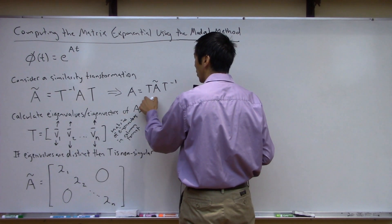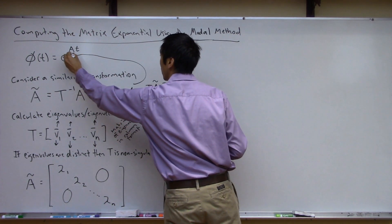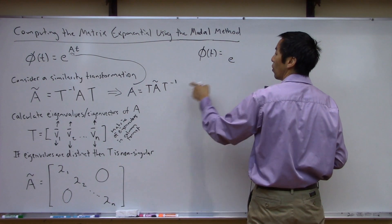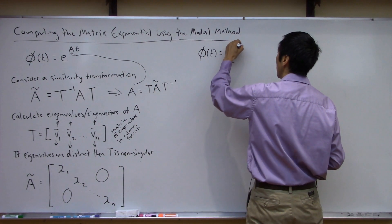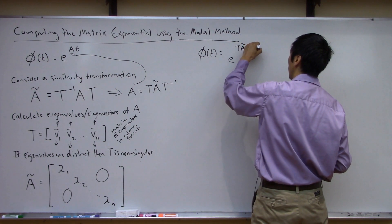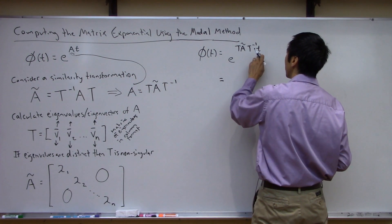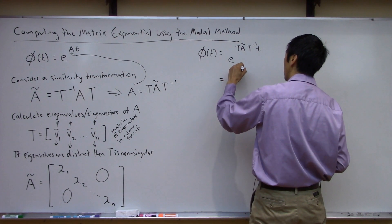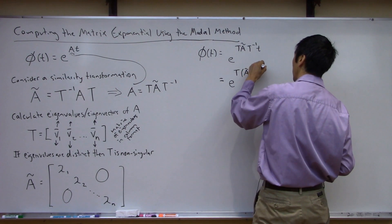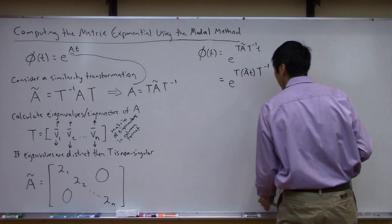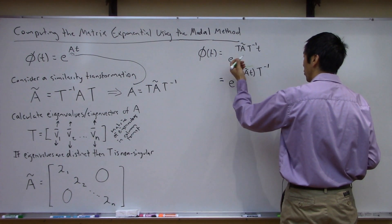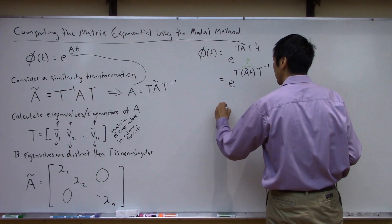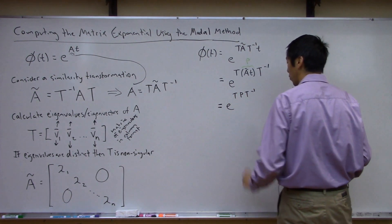Now let's substitute this expression for A into our matrix exponential. So our matrix exponential is E to the (T A-tilde T-inverse) times lowercase t. Since these are matrices, I can move the lowercase t inside and write this whole thing as T times (A-tilde·t) times T-inverse. You could call this inner matrix P, and write this as E to the (T P T-inverse).